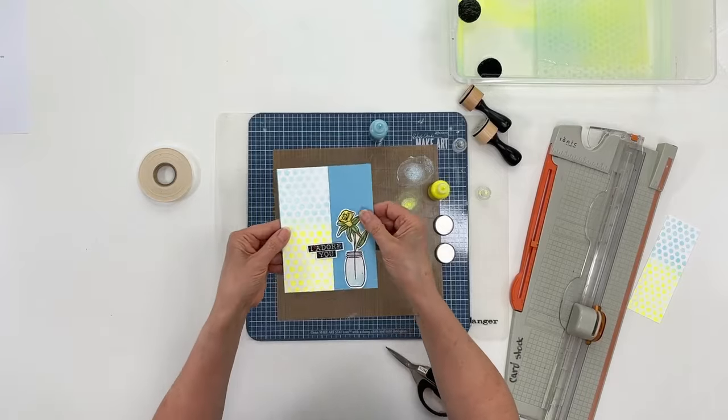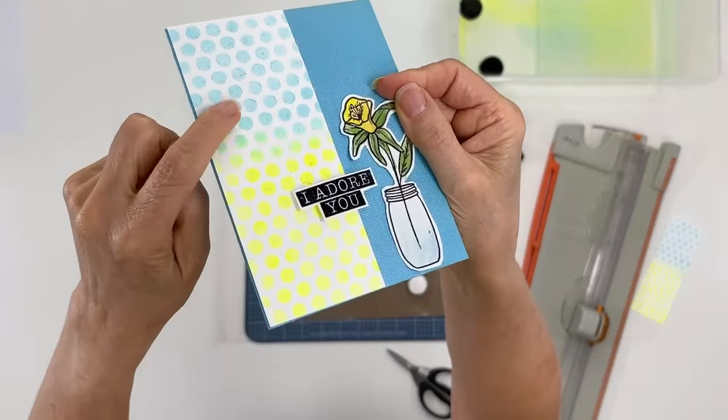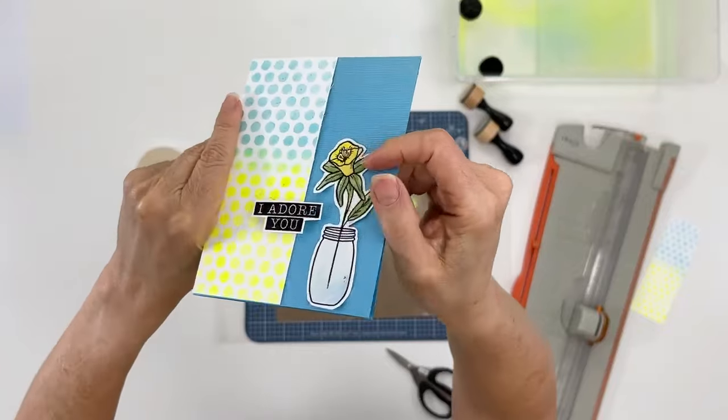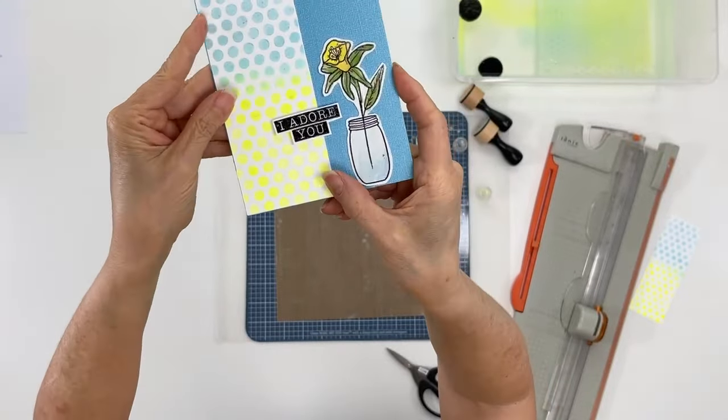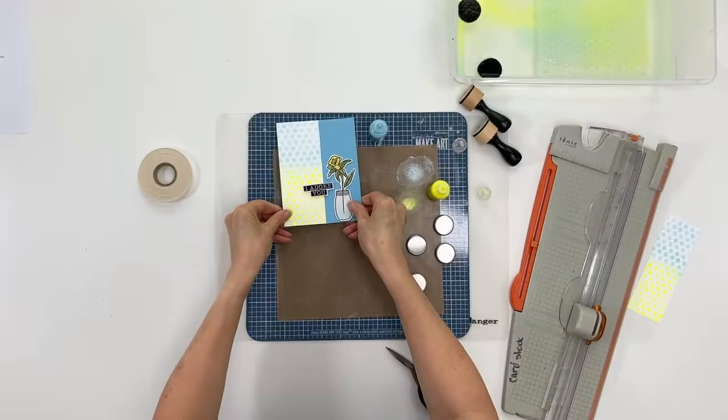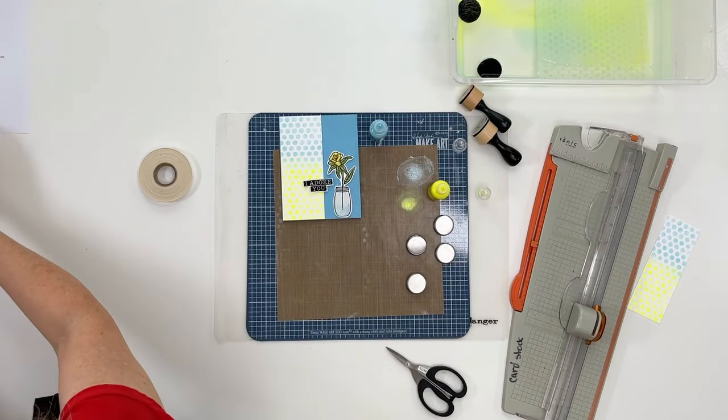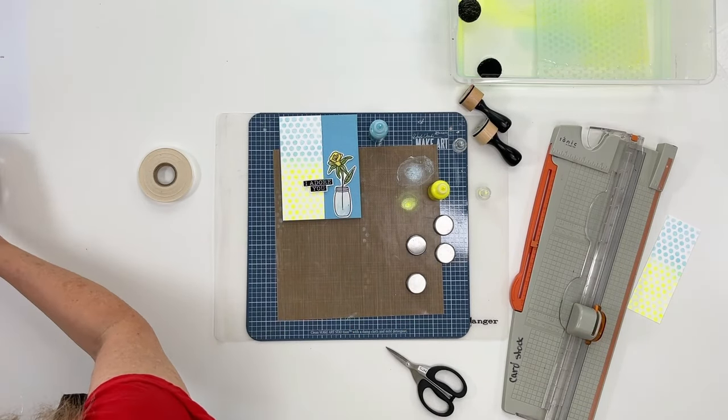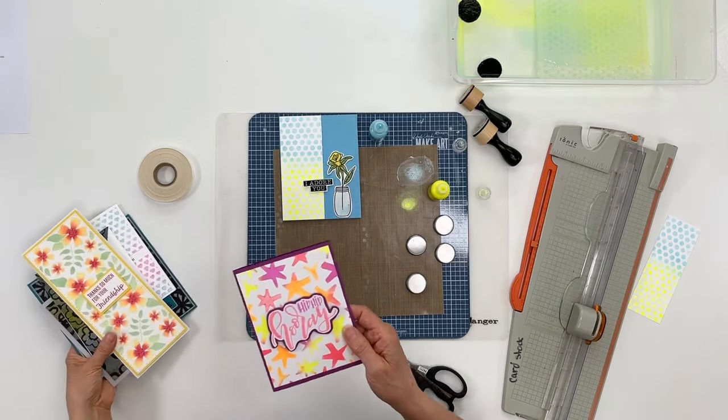There you have it. We have this subtle background that has a pearlescent shine to it. Let me show you what else we did. This is a fun technique, so I have a lot of examples for you.